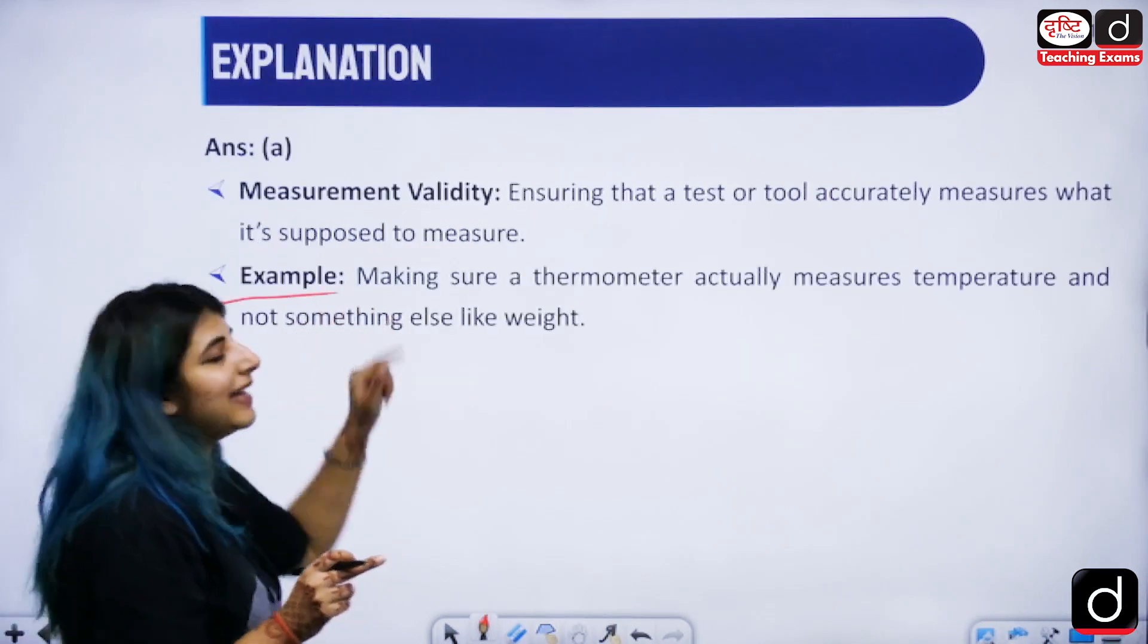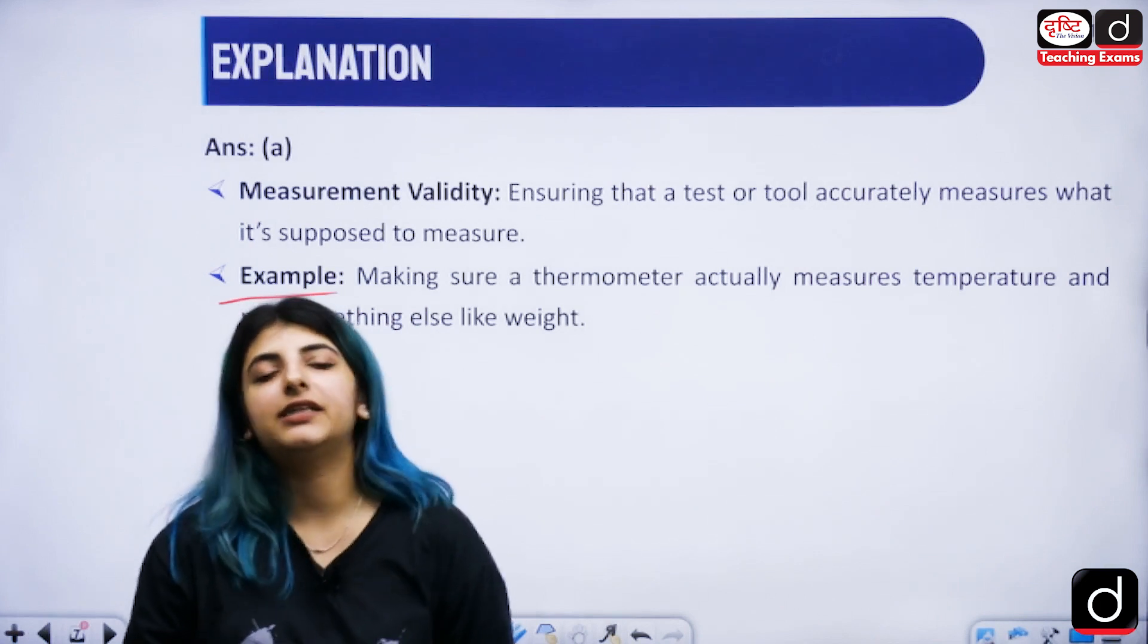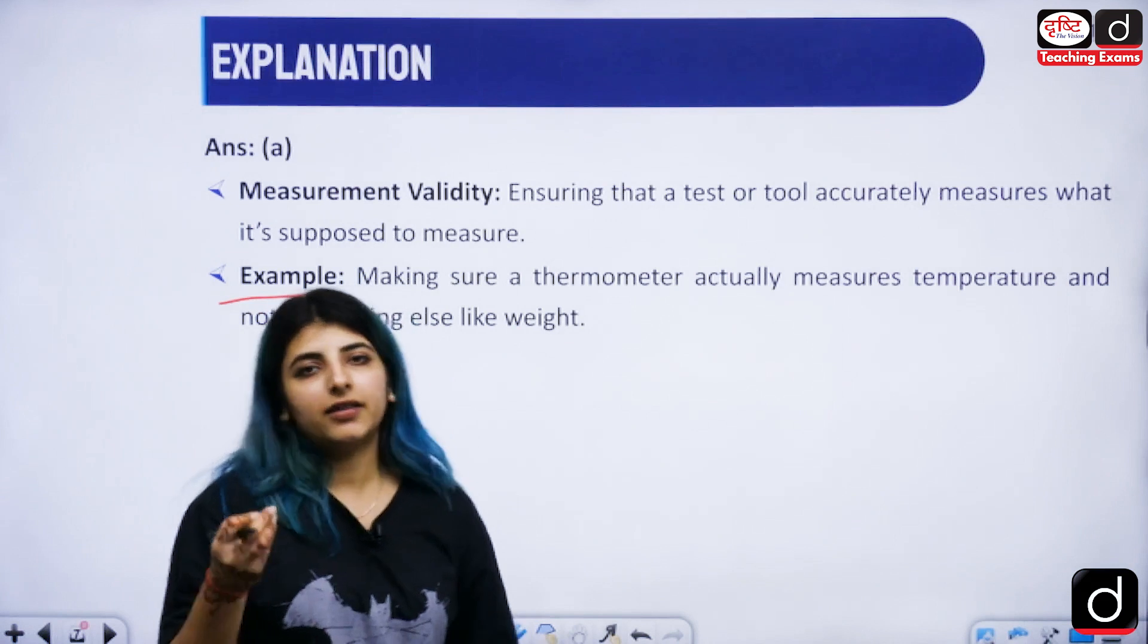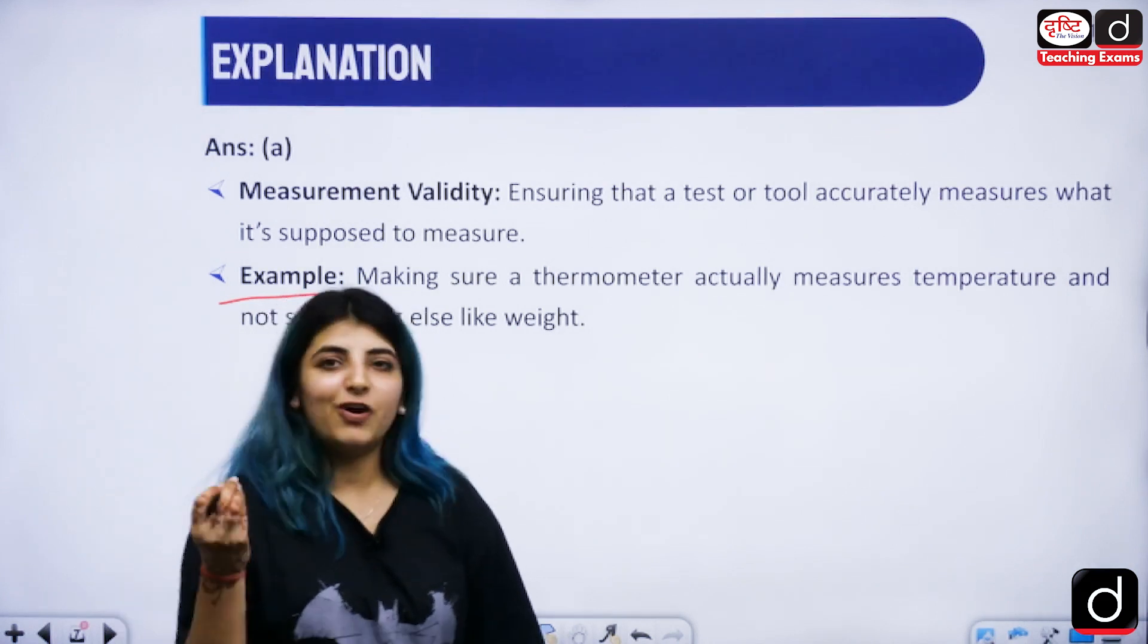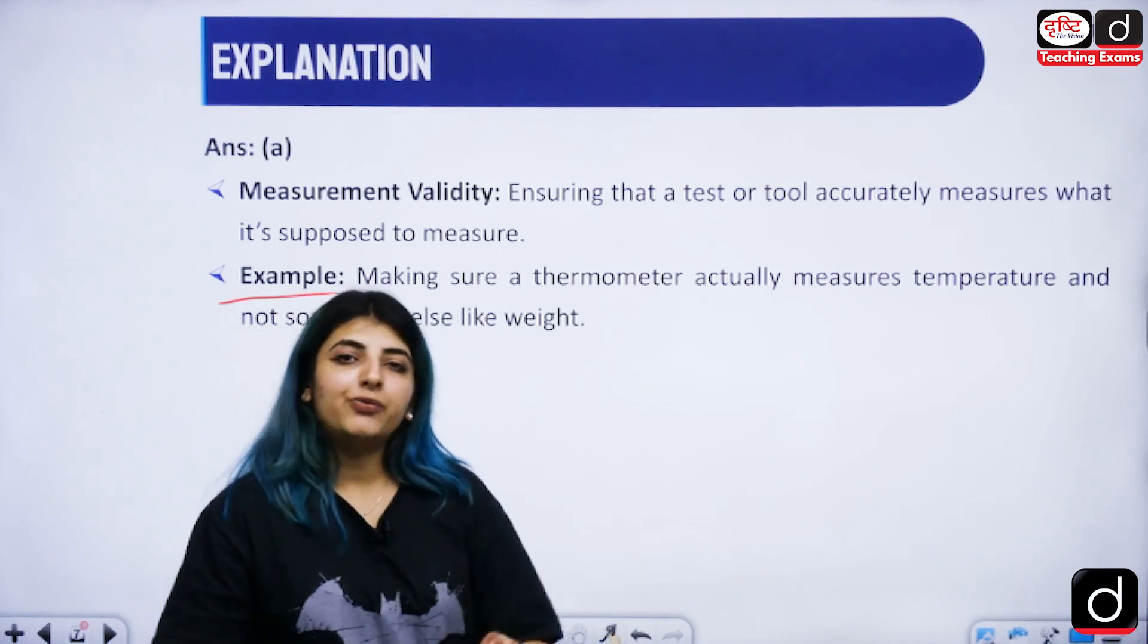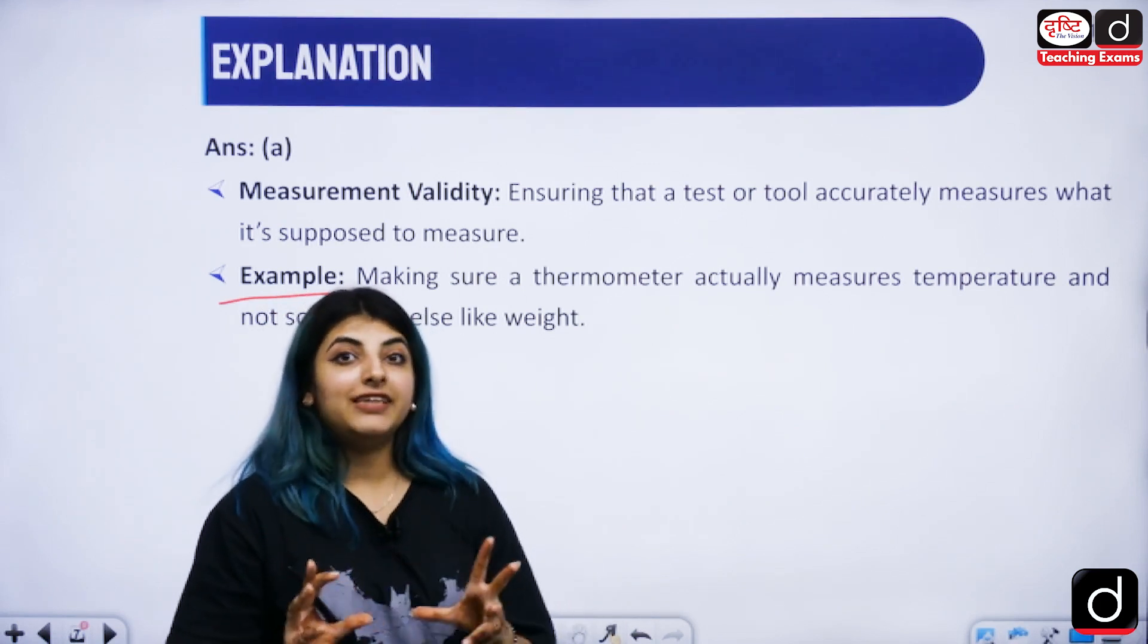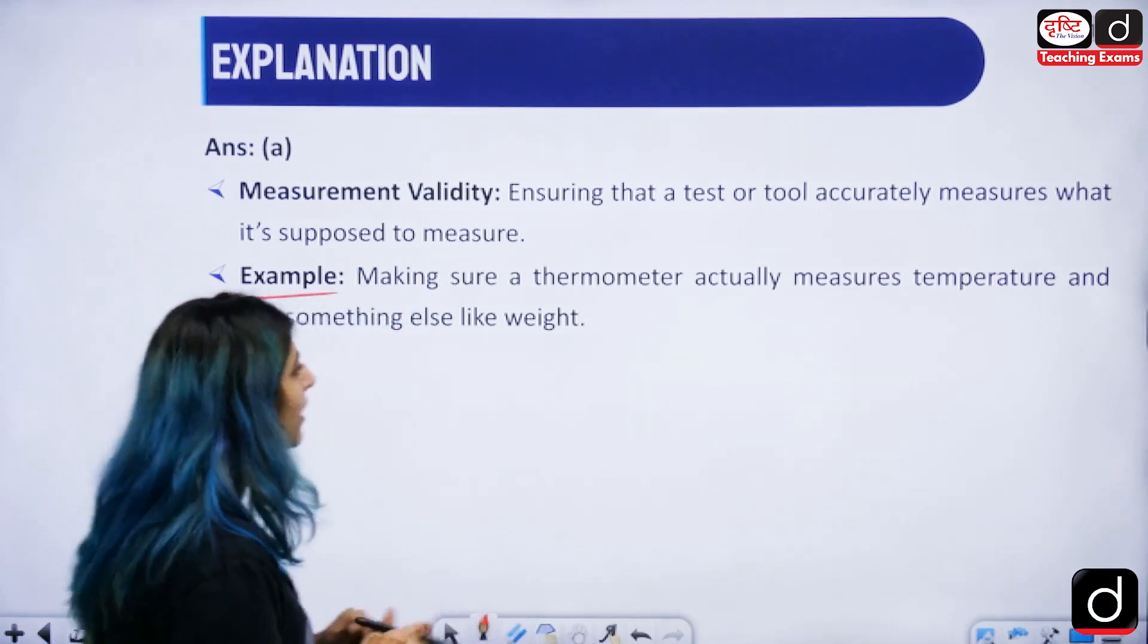Measurement validity tries to talk about when you are taking a tool, an instrument, and you are seeing that particular tool or instrument is measuring what it is supposed to measure. Let's look at the example here. The example is about a thermometer. You all know that a thermometer is needed when you want to measure temperature. You will not be able to measure your weight using a thermometer.